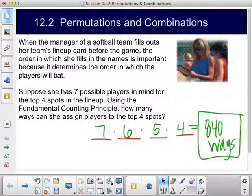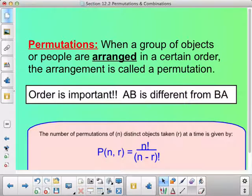So this is an example of a permutation. It's when a group of objects or people are arranged in a certain order. The arrangement is called a permutation. With permutation, order is important. So in this case, if I have A and B, that is different from B and A.